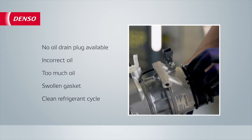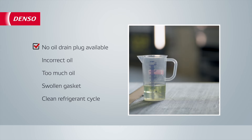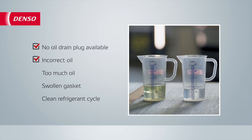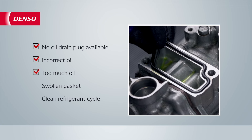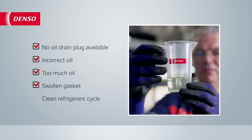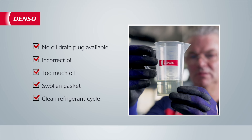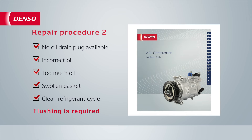When the compressor does not have an oil drain plug, if incorrect oil is found, or the system contains too much oil, or the rubber gasket of the discharge port is swollen due to the use of additives, but the refrigerant cycle is otherwise clean, then flushing with refrigerant is required and you can continue by following repair procedure two.